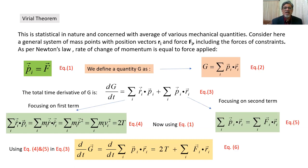We define a quantity capital G, represented as G equal to Pi dot Ri, given by equation number two. Taking the total time derivative of G, DG/DT equals summation over i of R-dot-i dot Pi, plus summation over i of P-dot-i dot Ri.